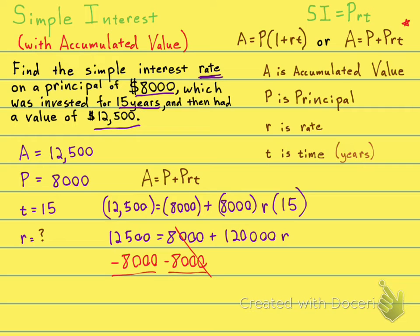On the left-hand side, 12,500 minus 8,000 is 4,500, which is your interest, by the way. If you start with 8,000, you end up at 12,500. Your interest is 4,500.